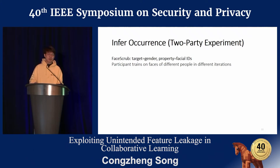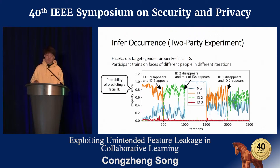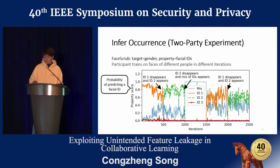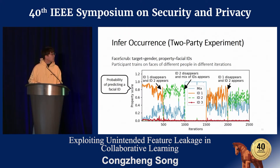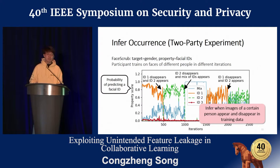Next, I'll show how to infer the time when a certain property occurs during training. We used the FaceScrub dataset, where the target is to predict gender given a face image and the property is facial IDs. The participant trains on faces of different people in different iterations. We show the probability of predicting different facial IDs in each iteration — different colors correspond to different IDs. Just by observing the change in colors, the adversary can infer when a certain person appeared and disappeared in training. For example, at iteration 500, the orange curve drops and the green curve goes up, corresponding to ID 1 disappearing and ID 2 appearing.